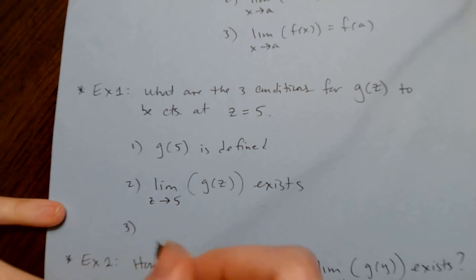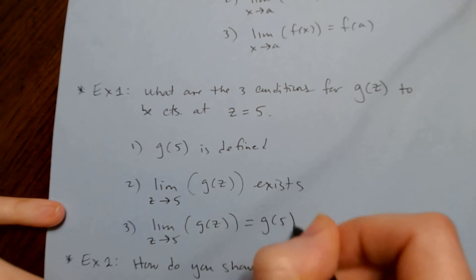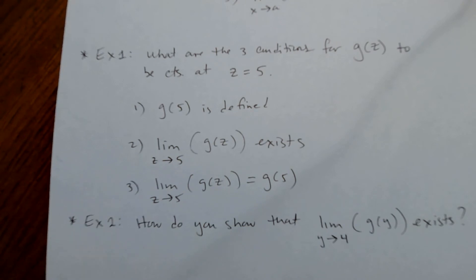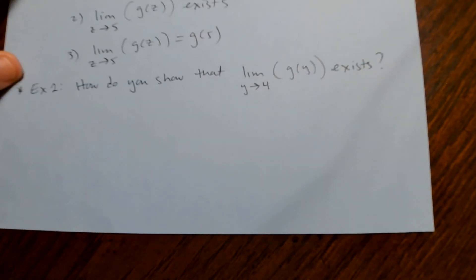And finally, the limit as z approaches 5 of g(z) equals g(5). You're going to have four problems like that to do, and then a few problems like this.